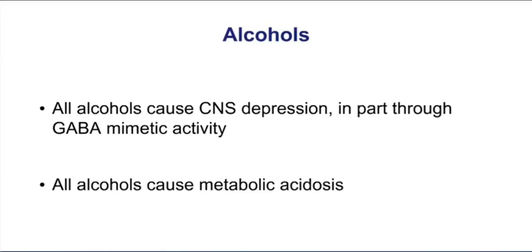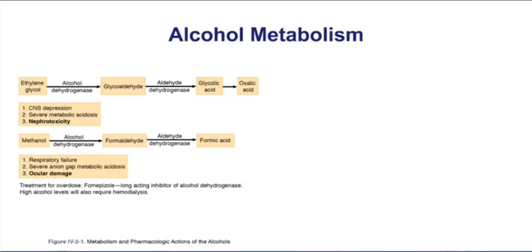When you look at alcohol metabolism, the end product of alcohol metabolism are acids. So one feature of alcohol overdose is that you may experience a metabolic acidosis. We're going to look at three different alcohols: ethylene glycol, methanol, and ethanol.